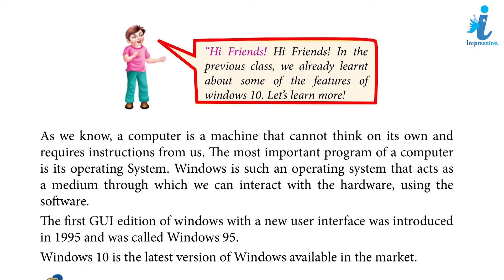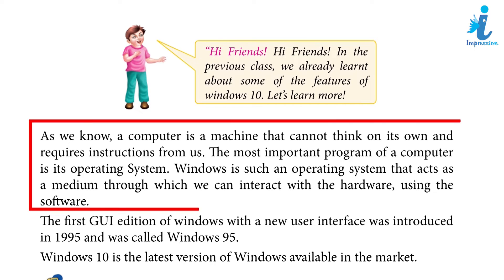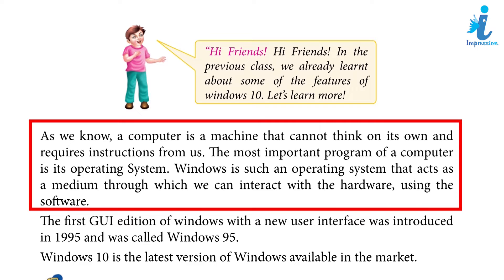Hi friends! In the previous class, we already learnt about some of the features of Windows 10. Let's learn more! As we know, a computer is a machine that cannot think on its own and requires instruction from us. The most important program of a computer is its operating system. Windows is such an operating system that acts as a medium through which we can interact with the hardware using the software.